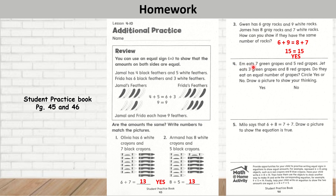Question number 4: M eats 7 green grapes and 5 red grapes. Jet eats 3 green grapes and 8 red grapes. Do they eat an equal number of grapes? 7 plus 5 is 12. 3 plus 8 is 11. Do they eat the same number of grapes? No, they don't. M has eaten 12 and Jet has eaten 11, so the answer is no.